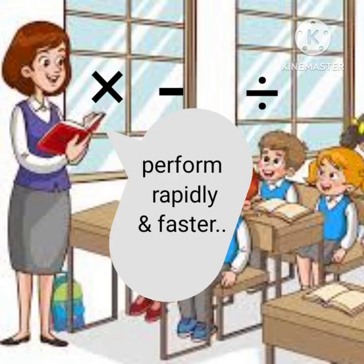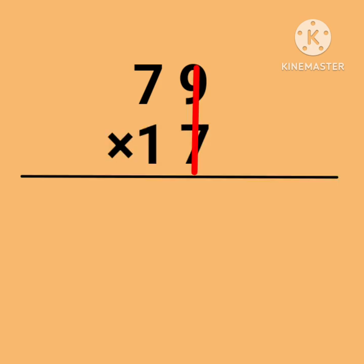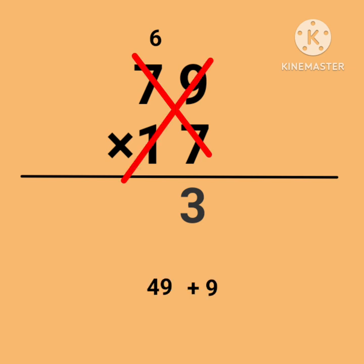For example, 79 × 17: 9 × 7 = 63, write 3, carry 6. 7 × 7 = 49, and 9 × 1 = 9. Adding with carry 6, we get